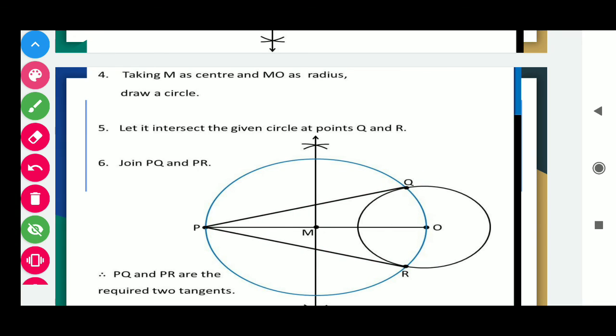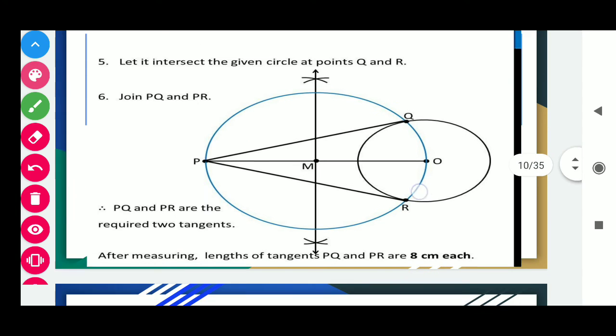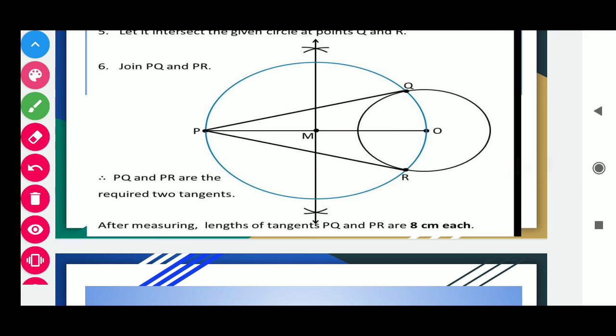What is tangent? Tangent means if a straight line touches the circle or curve at only one point, that line makes the tangent. In this way PQ and PR are the required two tangents. After measuring the lengths of the tangents, PQ and PR are 8 cm each.